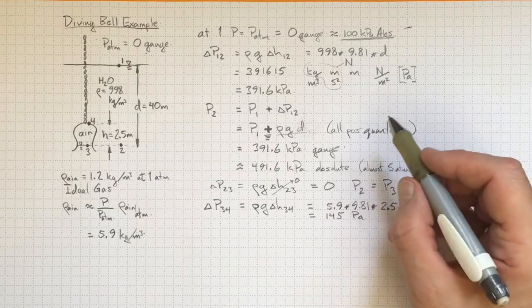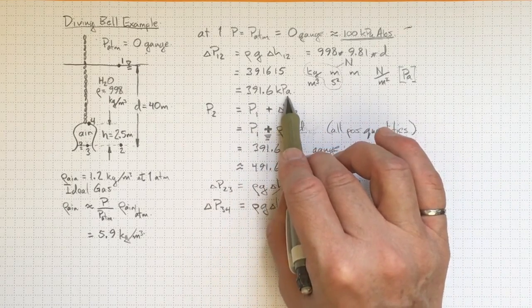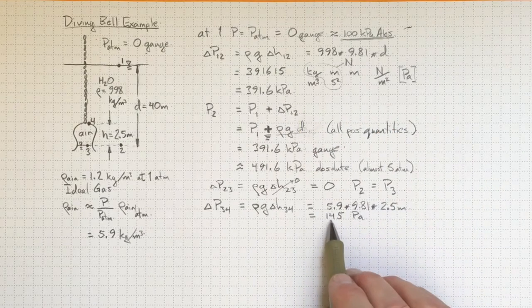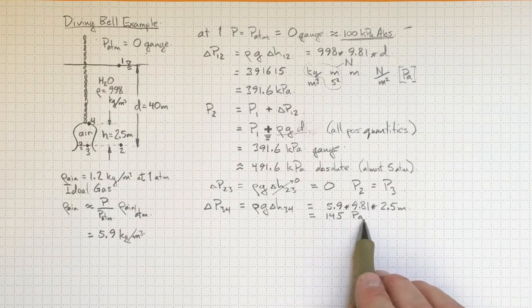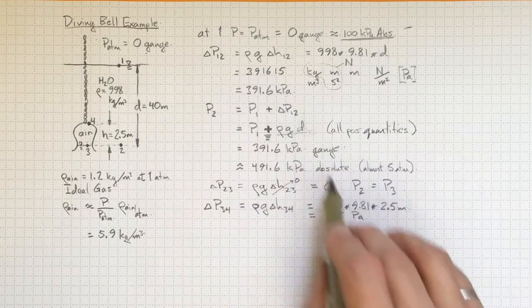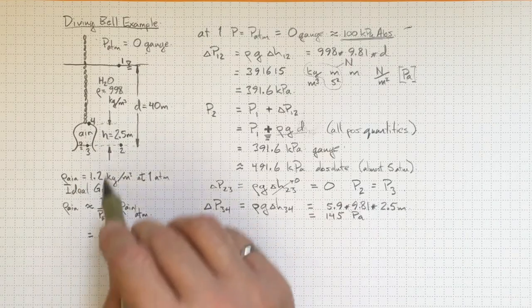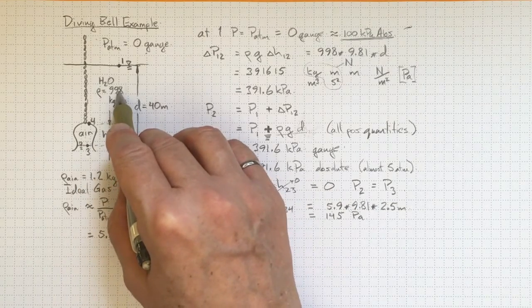Although we got a pressure difference of hundreds of kilopascals here, we're only getting a pressure difference of hundreds of pascals here. Differences by three orders of magnitude because the density of the air, even though it's gone up, is still much lower than the density of the water.